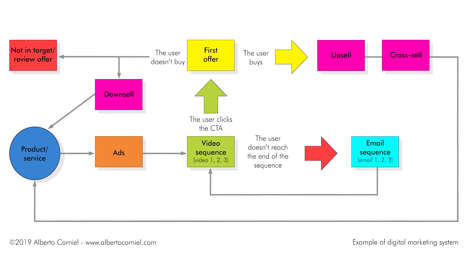The users who respond to the adverts are poured into a digital marketing funnel — a series of content that encourages users to take certain actions. It allows the business to skim qualified leads from those who are not in target or not interested. This process is part of what is called lead generation. A lead can be defined as a prospect who has strongly and publicly expressed their interest in a company's product or service. The user receives a sequence of videos where they are indoctrinated and learn more about the offering — features, benefits, opportunities, value proposition, and so on.